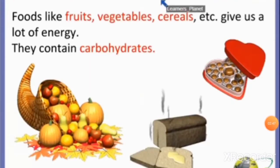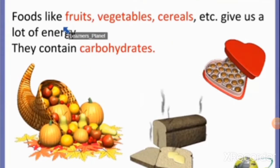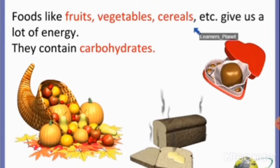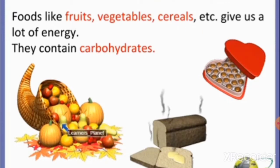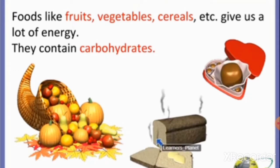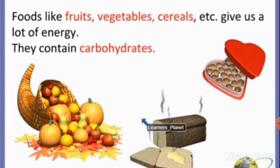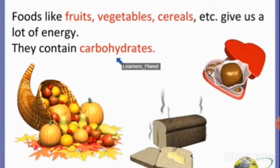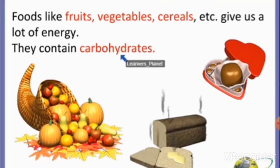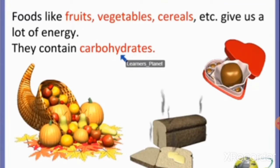Food items such as cereals like rice, wheat and corn, and vegetables such as potatoes give us a lot of energy. They contain carbohydrates. Food items rich in carbohydrates are called energy-giving food. People who do a lot of physical work such as laborers, farmers and sports persons need a lot of carbohydrates to give them more energy.